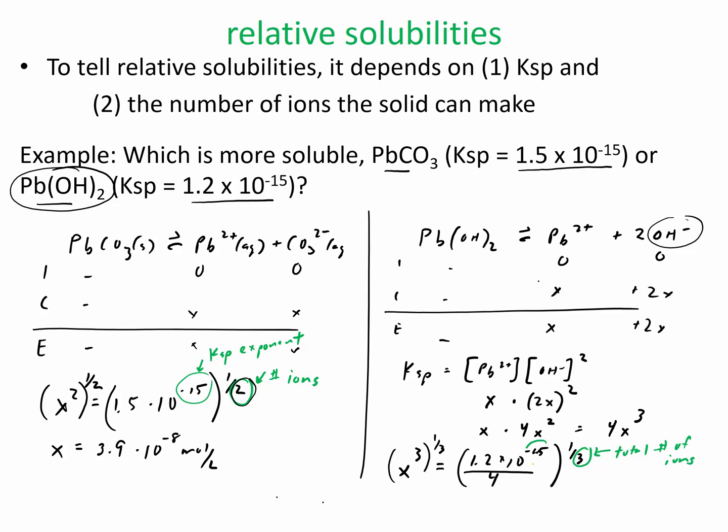And then this 15 right here is from the Ksp. So I'm going to summarize this with a little shortcut so you don't have to do full-on ice tables to figure this out. So anyway, my x right here equals 6.7 times 10 to the negative 6 moles per liter.